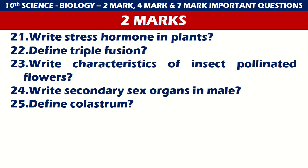Questions 21 to 25: Write the stress hormone in plants. Define triple fusion. Write characteristics of insect-pollinated flowers. Write secondary sex organs in male. And define cholesterol. Stress hormone is very important, triple fusion is also very important, and write secondary sex organs in male is also important.